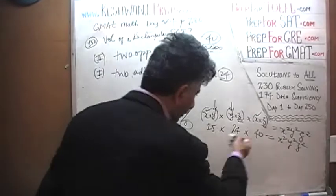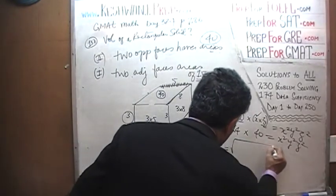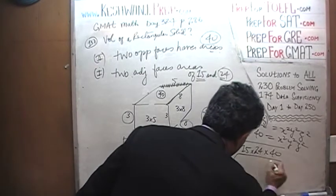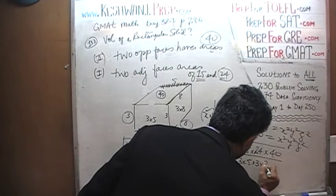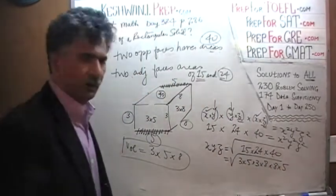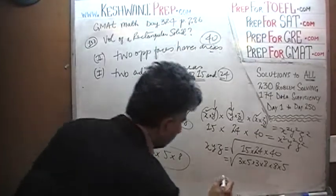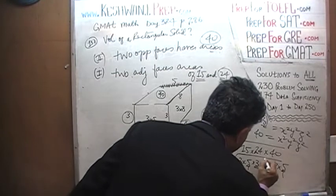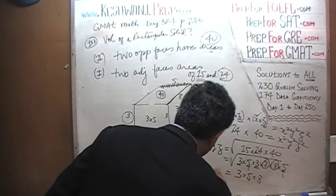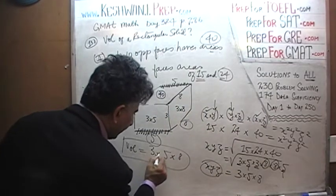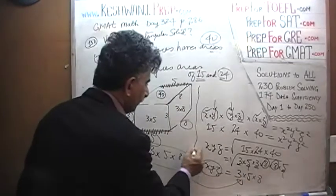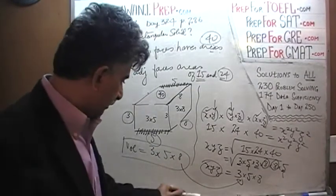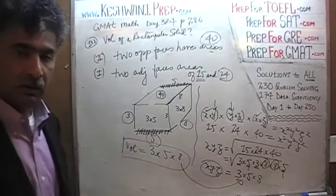Now we take the square root of both sides. We get X times Y times Z equals the square root of 15 times 24 times 40. We're almost done. 15 is 3 times 5, 24 is 3 times 8, 40 is 8 times 5. The square root: we see two 3s so one 3 comes out, two 5s so one 5 comes out, two 8s so one 8 comes out. Therefore X times Y times Z equals 3 by 5 by 8 — just like before. What you see here is the classical, traditional, algebraic approach, and what we did earlier was a non-traditional approach. Either one will do the job.